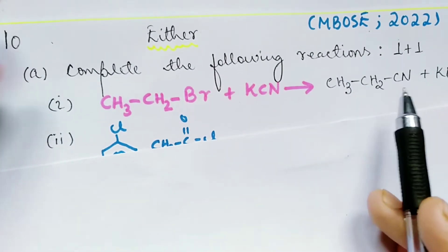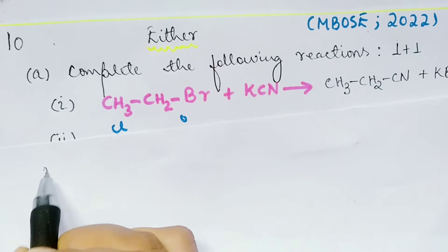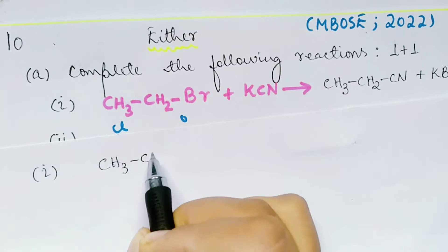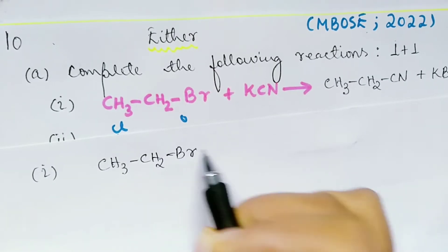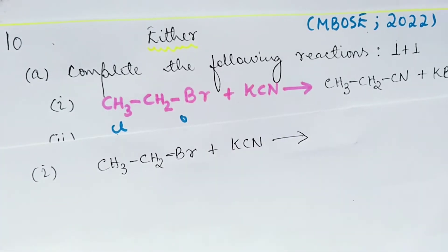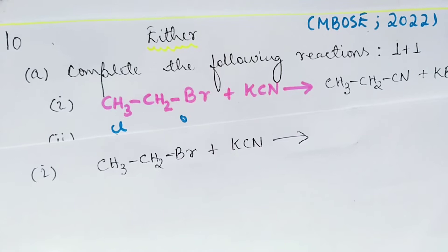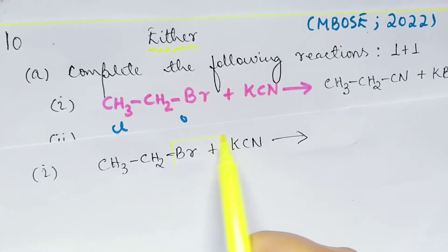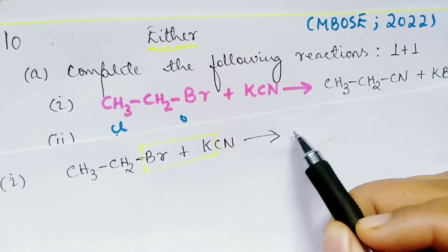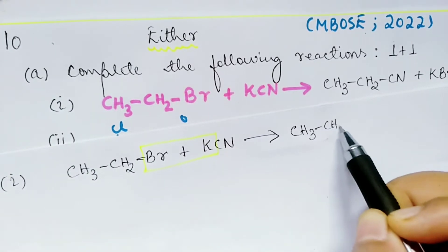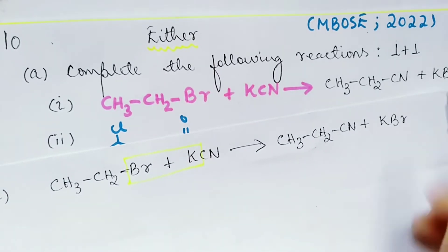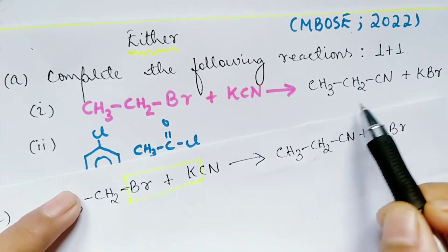Let's see how we get this product. We have ethyl bromide and potassium cyanide — this is simple. We just eliminate potassium bromide and we have ethyl cyanide, and potassium bromide as the byproduct.